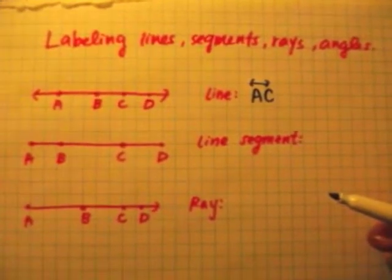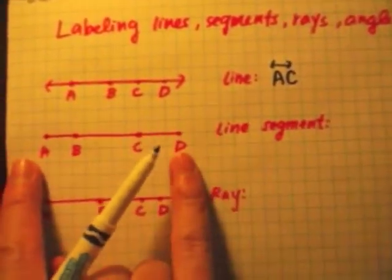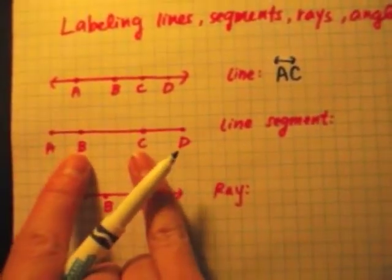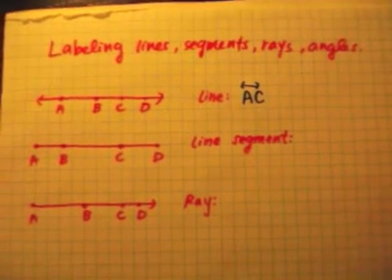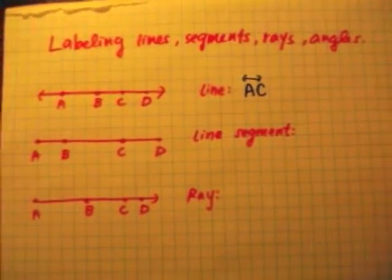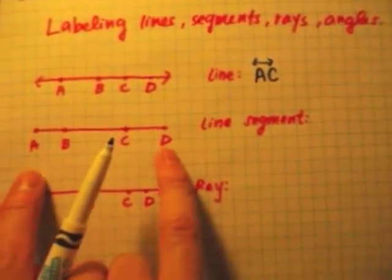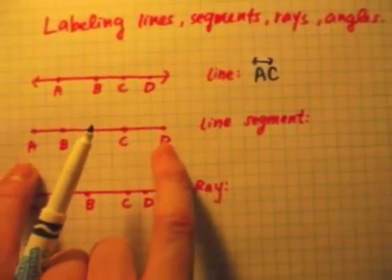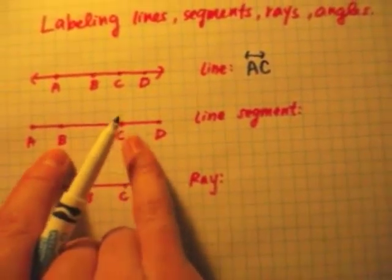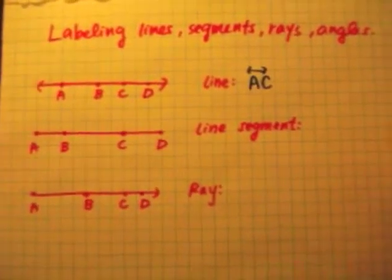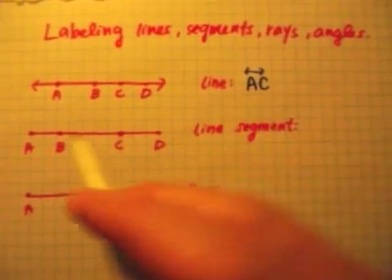For the line segment, it really depends on which segment you're talking about. Am I talking about the whole line segment, or am I talking about the middle line segment? The reason why it matters is because when you label line segments, you have to take the two endpoints. So if I'm talking about the whole line segment, I need to use the letters A and D. If I'm talking about the middle line segment, I need to use the points B and C. You're pretty much limited to the endpoints.